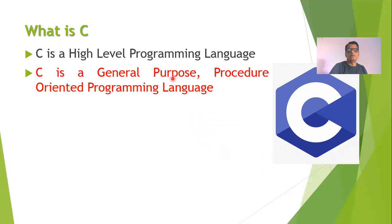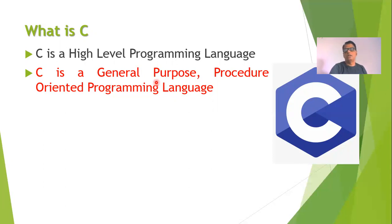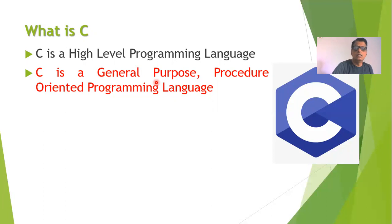C language is a general purpose language. It means we can use this language for development of software that can be used in any domain. For example, we can develop an operating system, a database management system, or any specific application such as a reservation system by using the C programming language. It is not designed for only some specific tasks.